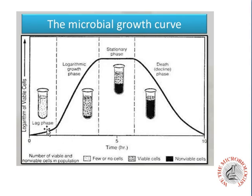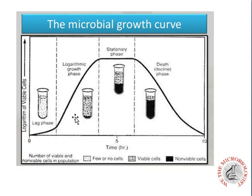In the logarithmic growth phase, you can see a certain shift and increase in the bacterial cells in the medium. Some precipitate you see consists of dead cells, but this is very few and may be negligible.